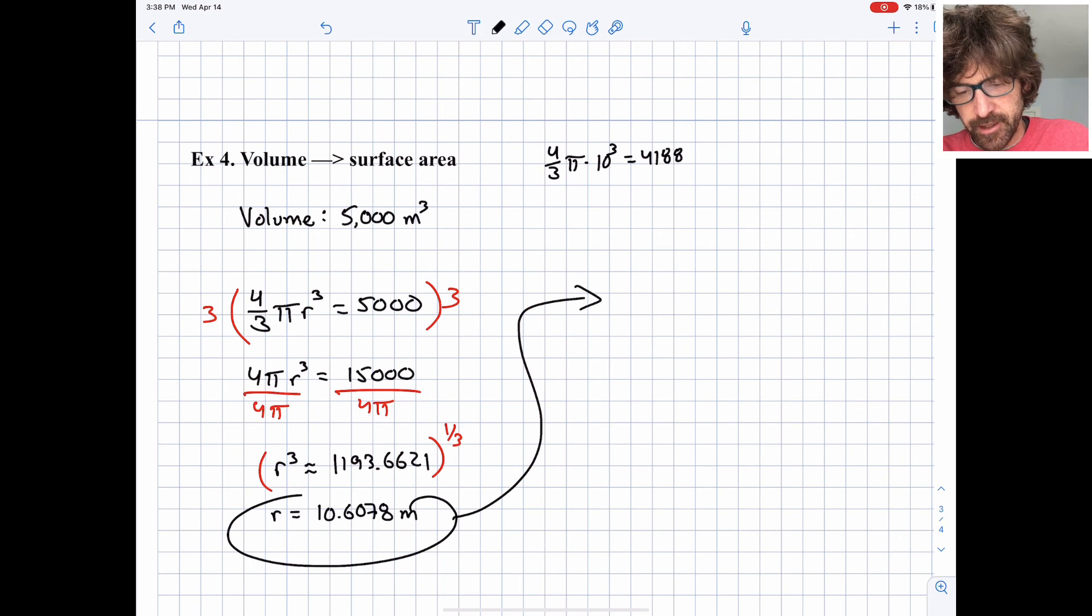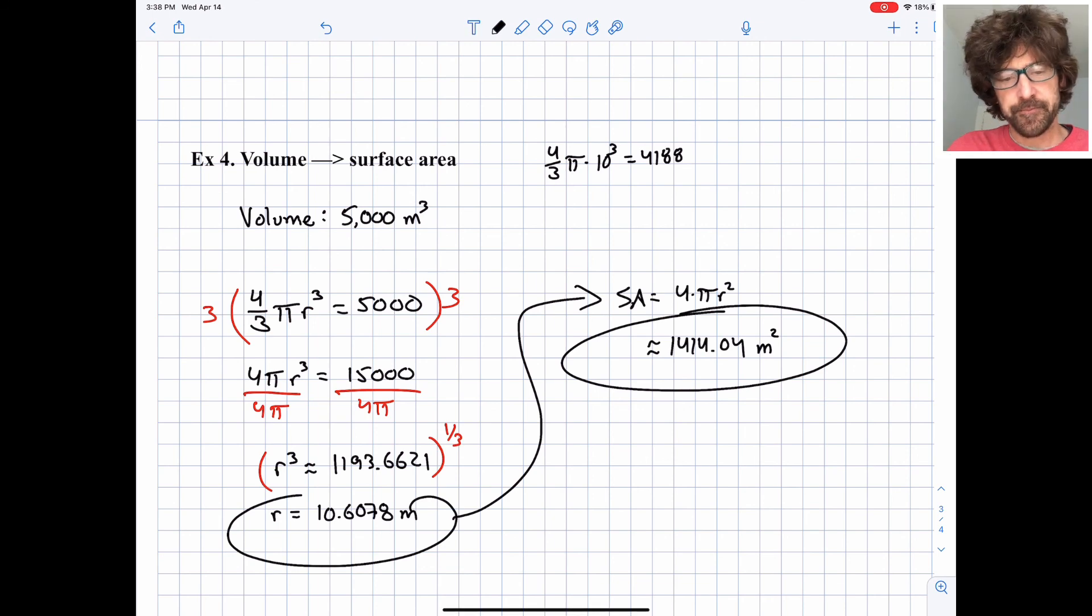Now let's find our surface area. So the surface area is 4 times π times r². We're going to take that 10.6078, square it and multiply by 4 and multiply by π. And we get our final approximate answer is 1,414.04, and that's going to be in square meters because we're finding surface area. So the volume was 5,000 cubic meters. The surface area is just over 1,400 square meters. It was a tough one, but we did it. And that's a good place to stop. Bye-bye.